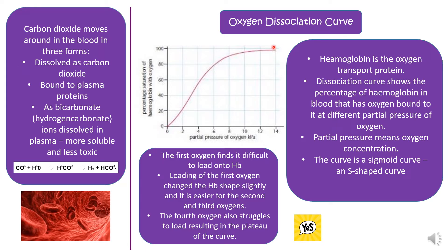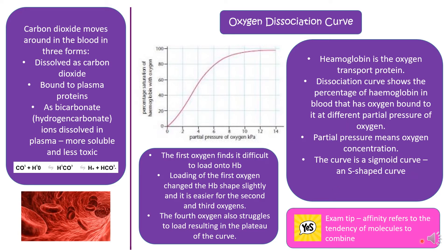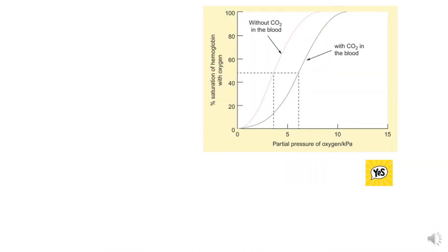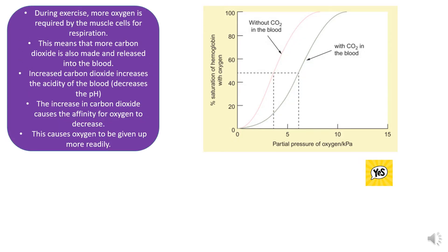You'll notice that the curve doesn't actually go up to 100%, so it's very unusual for every single hemoglobin to have four O2 molecules bound to it. The word affinity will come up quite a lot in the next few slides. Affinity refers to the tendency of the molecules to combine. If there's a high affinity, it means that the oxygen is happy to load onto the hemoglobin. If there's a low affinity, it means that the oxygen generally dissociates.